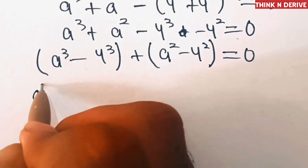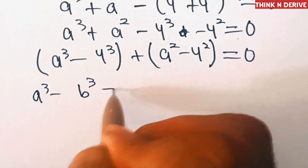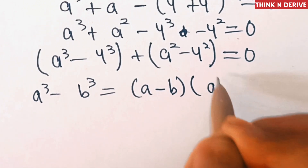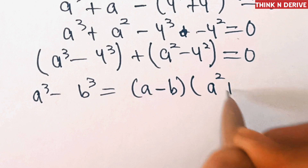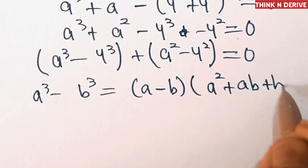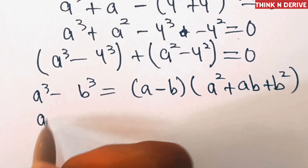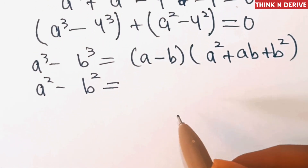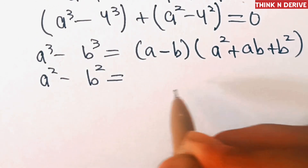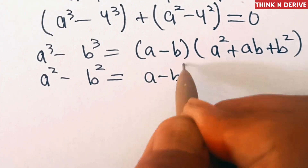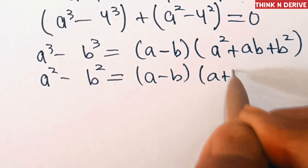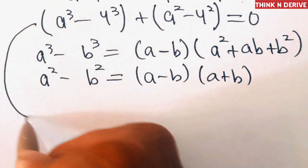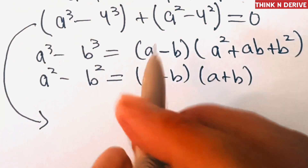Now we have two algebraic identities to apply: one is a³ − b³, and the other is a² − b². We know that a³ − b³ = (a − b)(a² + ab + b²), and a² − b² = (a − b)(a + b).